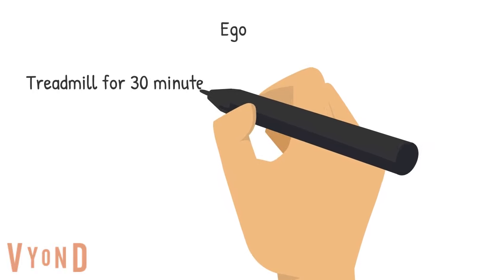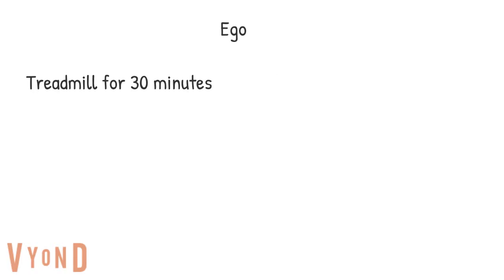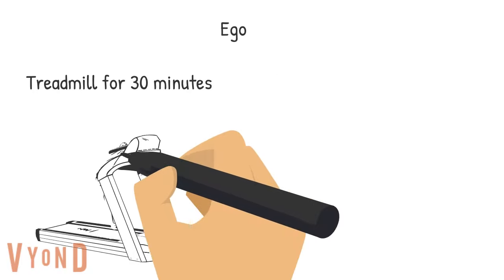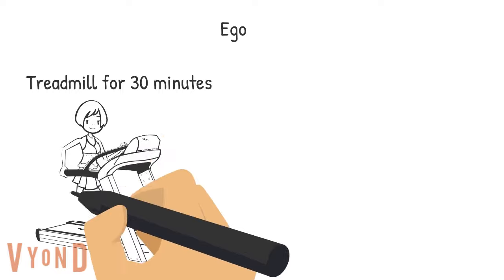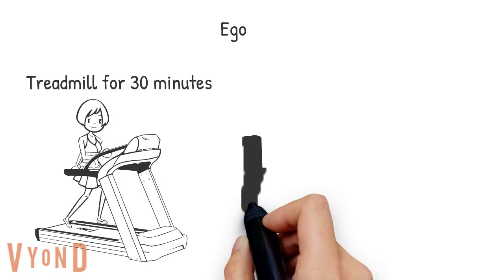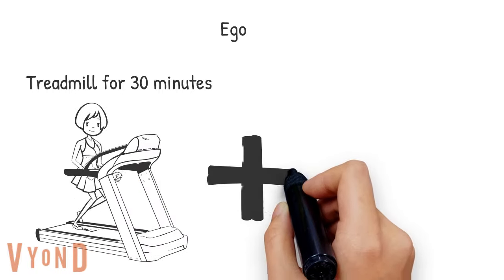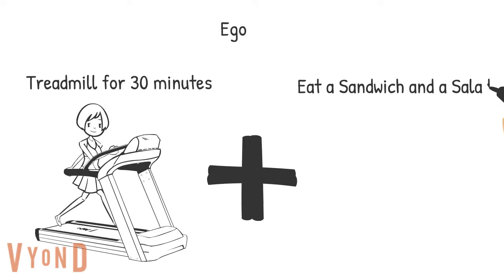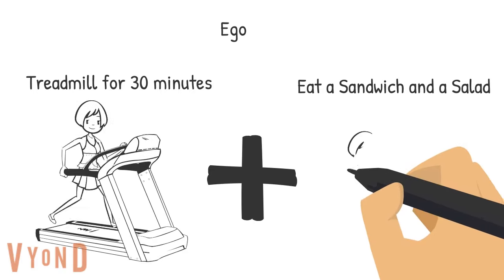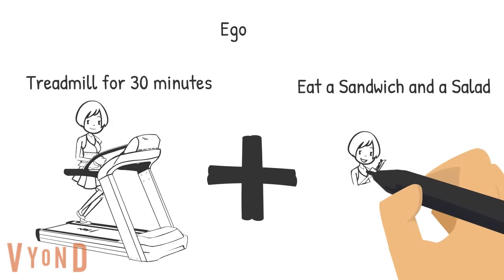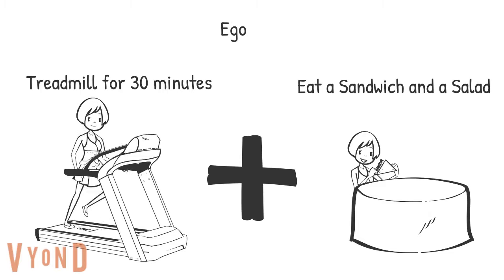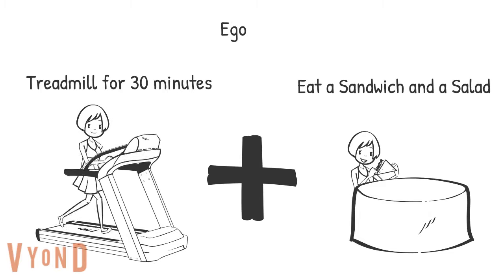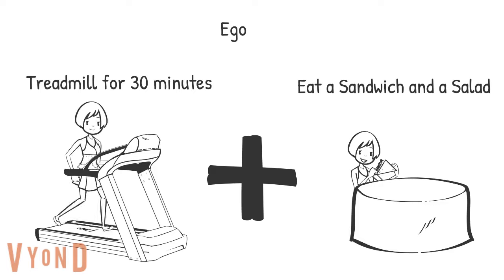Teresa's ego will try to find a compromise between the id and the superego. For example, Teresa may compromise by, instead of doing a 60-minute workout like the superego suggests, maybe doing a 30-minute run on the treadmill instead, and instead of just eating a salad, maybe eating a sandwich and a salad. That would be a good compromise.